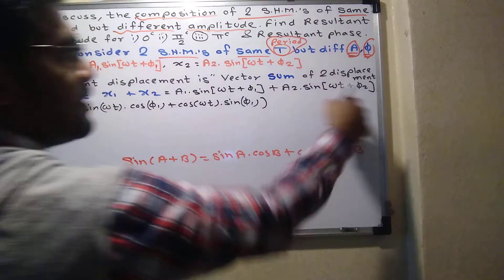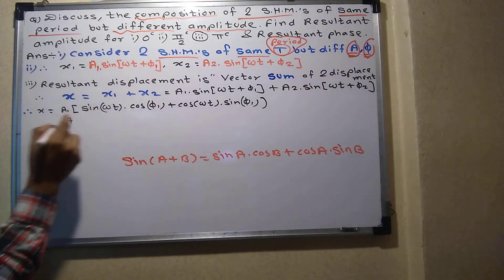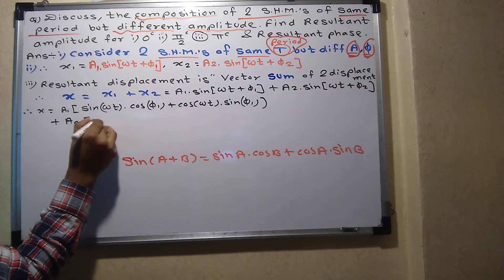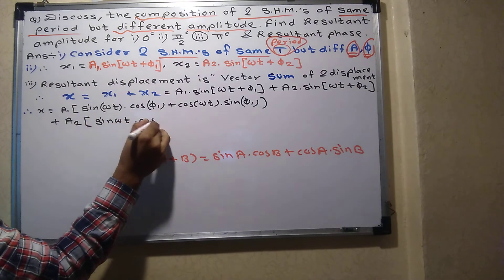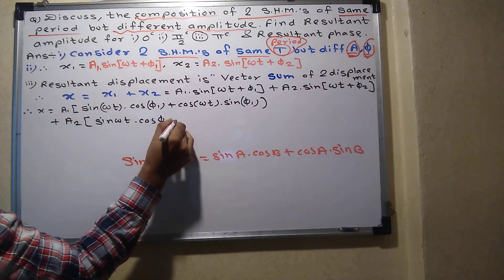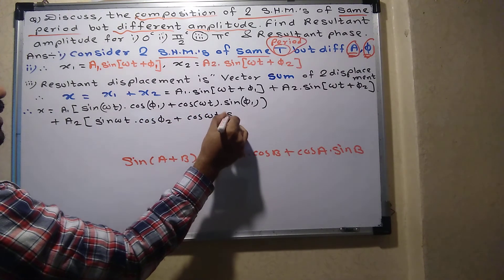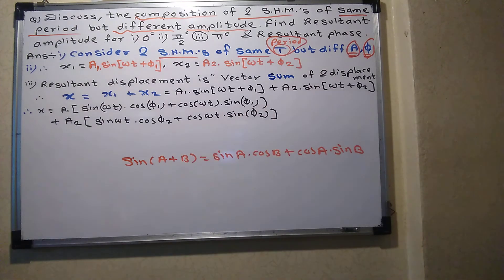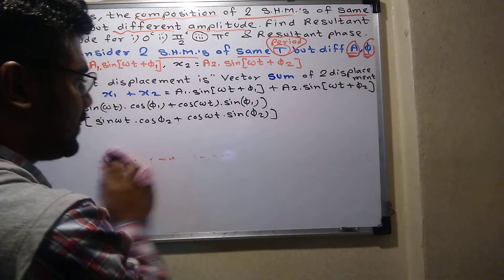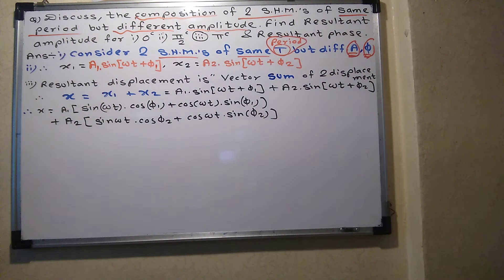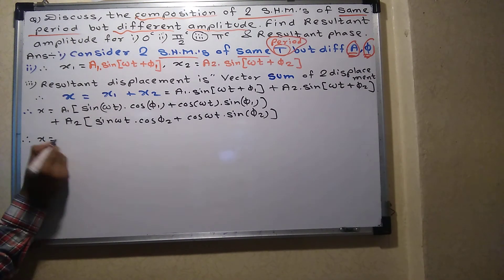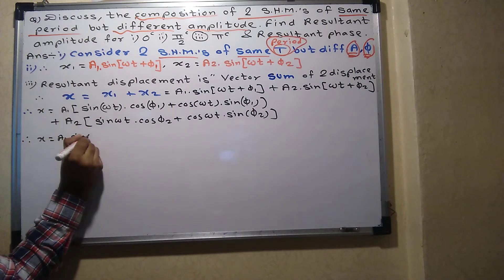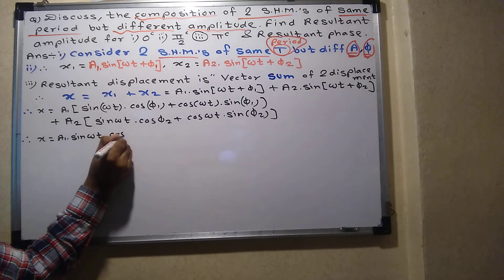For the second term a2, we apply sin(A + B) again: sin(ωt + φ2) = sin(ωt)·cos(φ2) + cos(ωt)·sin(φ2). Therefore, X = a1·sin(ωt)·cos(φ1) + ... collecting terms with sin(ωt) and cos(ωt) respectively.